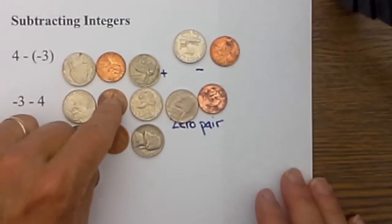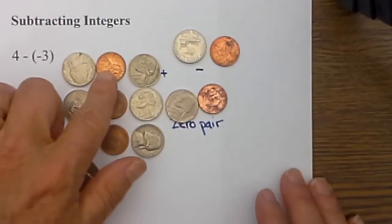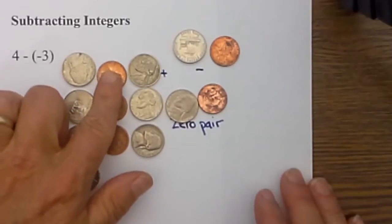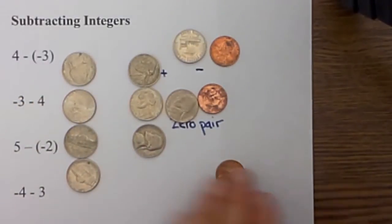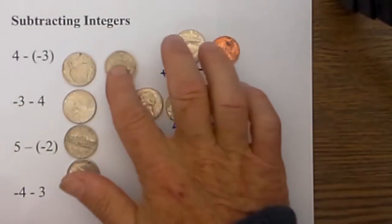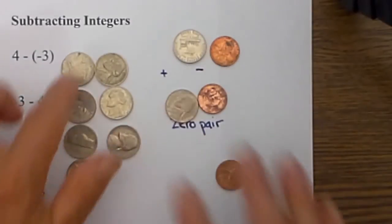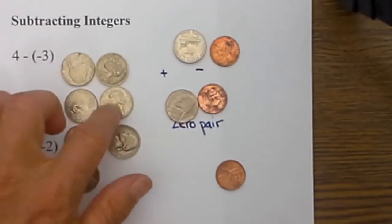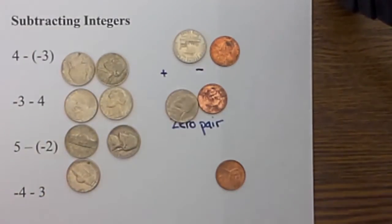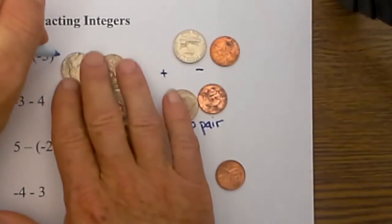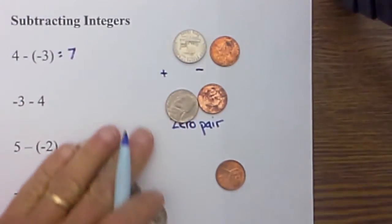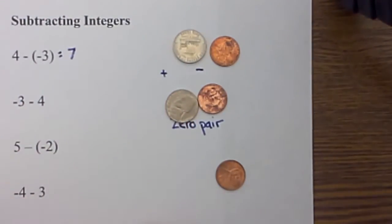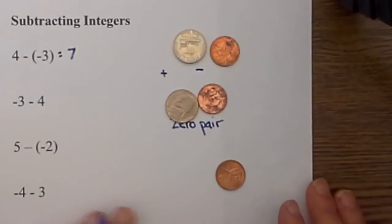I can add a zero pair because a zero pair equals zero, and then I can now subtract. Since I have some negative numbers I can subtract them, so I will take these three numbers away — minus three — and I am left with seven positive numbers. So it equals seven.